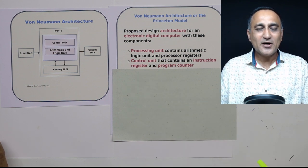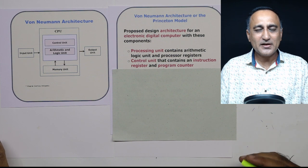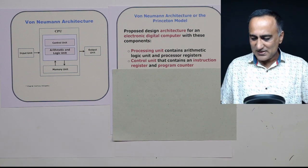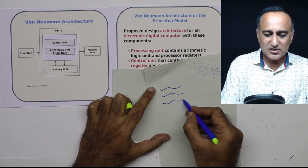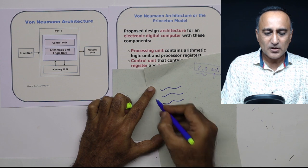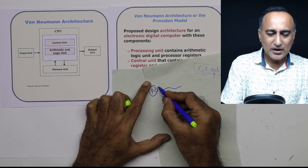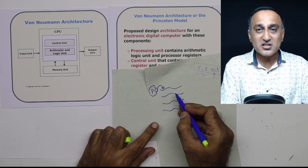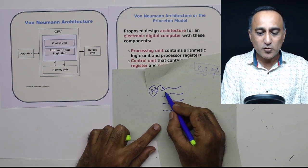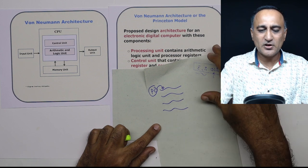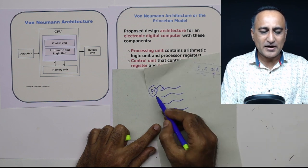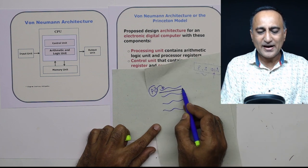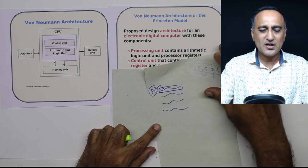Now, what is the program counter? A program is nothing but a series of instructions. Suppose this is instruction one, instruction two, instruction three, instruction four. The program counter keeps track of which instruction the CPU is currently executing. Right now, the program counter simply keeps track of the address of the current instruction being executed. In higher semesters, you will study a lot more about it.